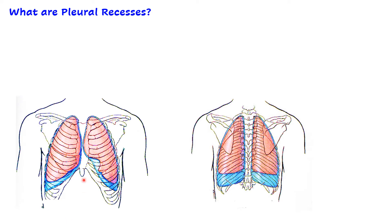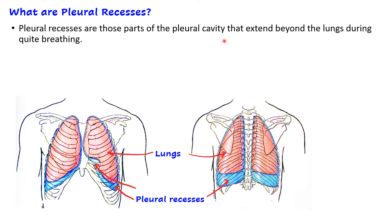Pleural recesses are those parts of the pleural cavity that extend beyond the lungs during quiet breathing. The pleural cavity is present between the visceral layer and the parietal layer. In this picture you can see the lungs are covered with visceral pleura, which is adherent to the surface of the lung, and we can also see the margins of the parietal pleura. Between these two layers will be the pleural cavity, and at certain places marked with arrows, you can see that the pleural cavity is extending beyond the margins of the lung, forming the pleural recesses.